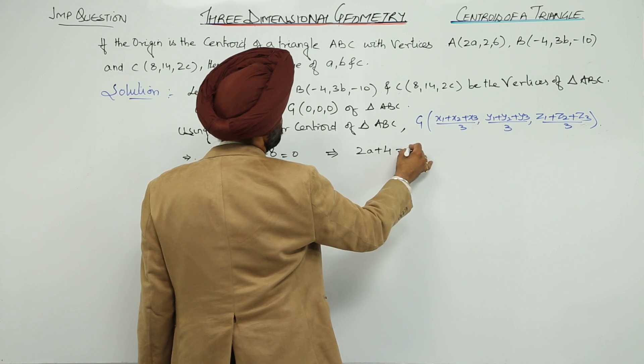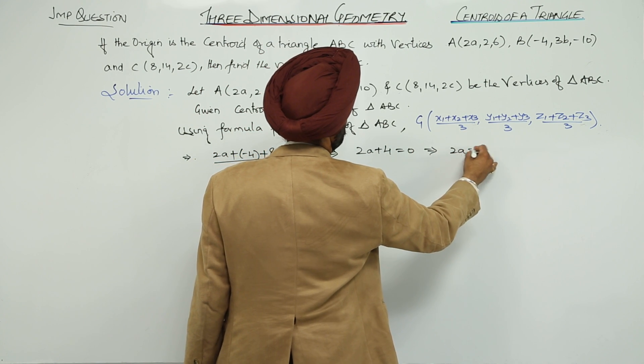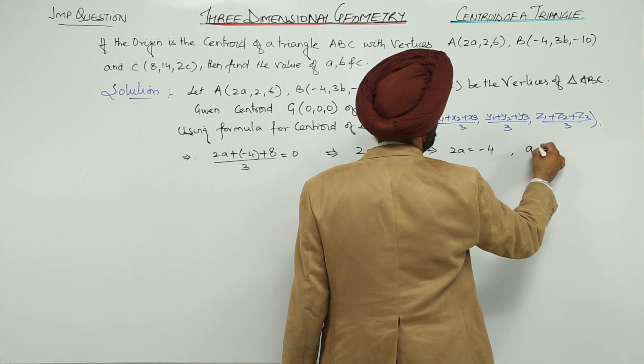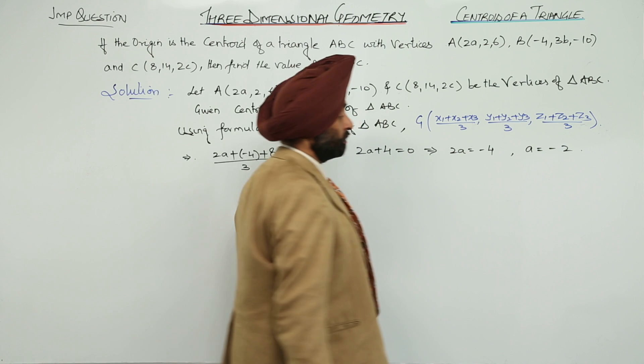2a + 4 = 0, so 2a = -4, therefore a = -2.